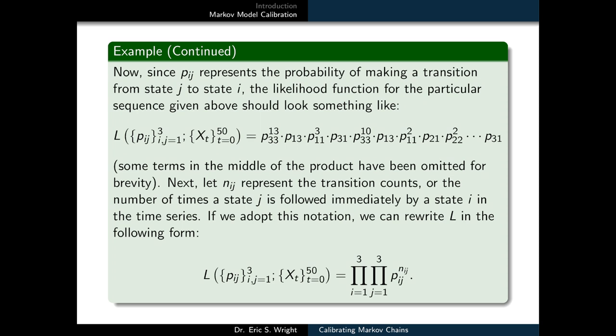Now, since pij represents the probability of making a transition from state j to state i, we can form a likelihood function for any sequence of state observations that we've made like the one that we saw in the previous slide. We would simply need to work our way down the sequence and form a product of those transition probabilities. Each time we see a transition from some state j to state i, we insert that probability pij into the product.